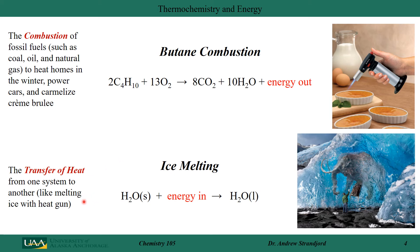The fourth example is a heat transfer process, where a heat gun is used to melt ice. We start with solid water and put energy into that system to create liquid water. In all four examples, energy is either being consumed or released, and it appears in several different forms.